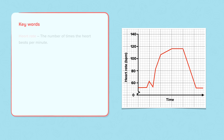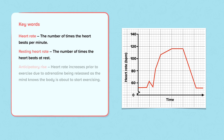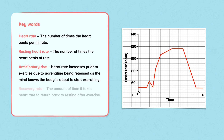Our key words. Heart rate is the number of times the heart beats per minute. Resting heart rate is the number of times the heart beats at rest. The anticipatory rise: heart rate increases prior to exercise due to adrenaline being released as the mind knows the body is about to start exercising. Recovery rate is the amount of time it takes the heart rate to return back to resting after exercise. Intensity is how hard an athlete exercises.